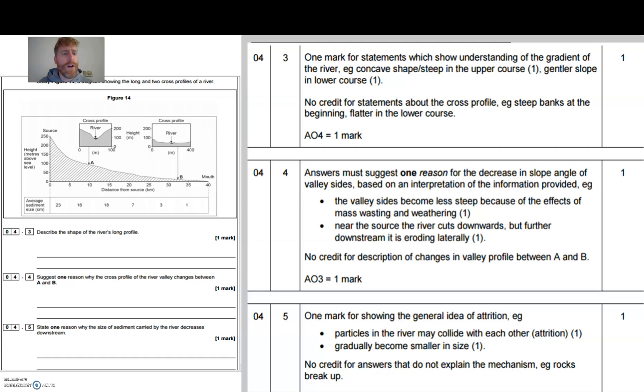Next question: suggest one reason why the cross profile of a river changes between A and B. Answers must suggest one reason for the decrease in slope angle of the valley sides. You can see here we've got very steep slope angle of the valley sides, and here not so steep. And it needs to be based on an interpretation of the information provided. Here's some examples: the valley sides become less steep because of the effects of mass wasting and weathering. Near the source the river cuts downwards, but further downstream it's eroding laterally.